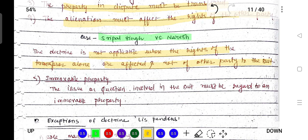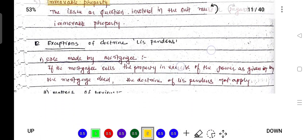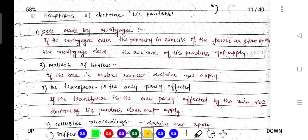Fifth, there must be immovable property. These are the five most important essentials of the doctrine. What are the exceptions of this doctrine? First, sale made by mortgagee. If the mortgagee, in the property in exercise of the power as given by the mortgage deed, conditions to sell, then the doctrine of lis pendens does not apply.